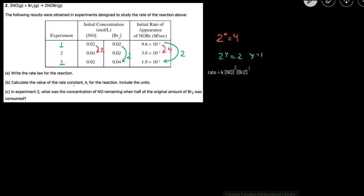B, we have to calculate the rate constant, which is K, for the reaction, and then we also have to include the units. To do that, we can just choose any of the experiments and plug in the concentration and the rate into the rate law and then solve for K. So I'm going to use experiment 1.